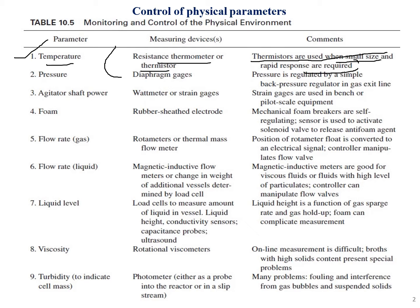The fourth point is foam. Foam is measured with the help of a rubber shield electrode. Mechanical foam breakers are self-regulating, and a sensor is used to activate a solenoid valve to release an anti-foam agent. Foam is not a good sign whenever it is produced, and leads to a lot of consequences.